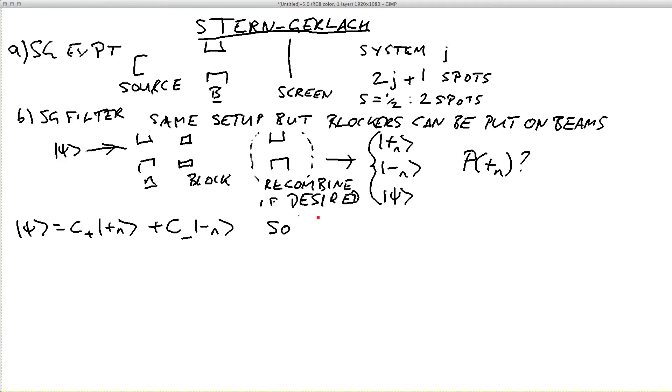Now we know from simple quantum mechanics that the probability of measuring a state in plus n is going to equal the square modulus of c_plus. The probability of measuring minus n is just equal to the square modulus of c_minus in the standard way.